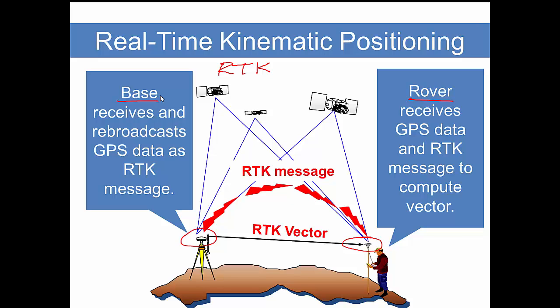There are a couple things going on here. The base is not only receiving data from the satellites, it is also packaging that up and rebroadcasting that as what we call the RTK message. We can do this via radio, a little radio transmitter, or we can do it with a cellular phone link and the internet.